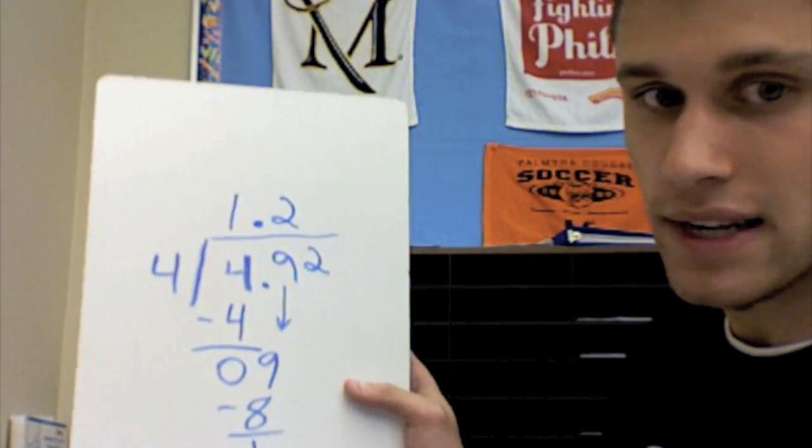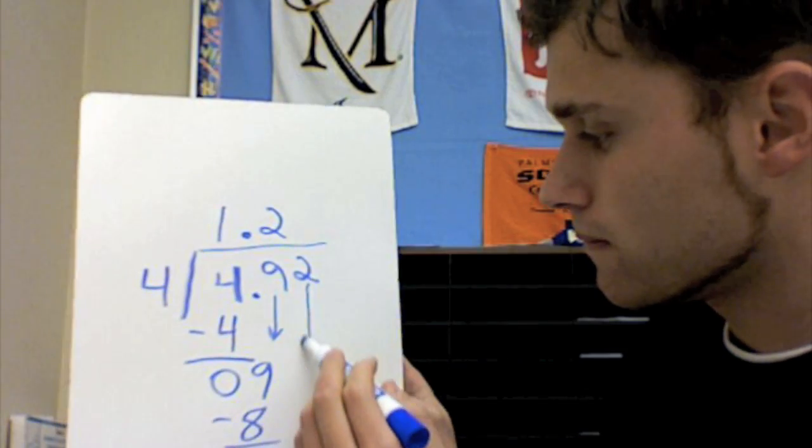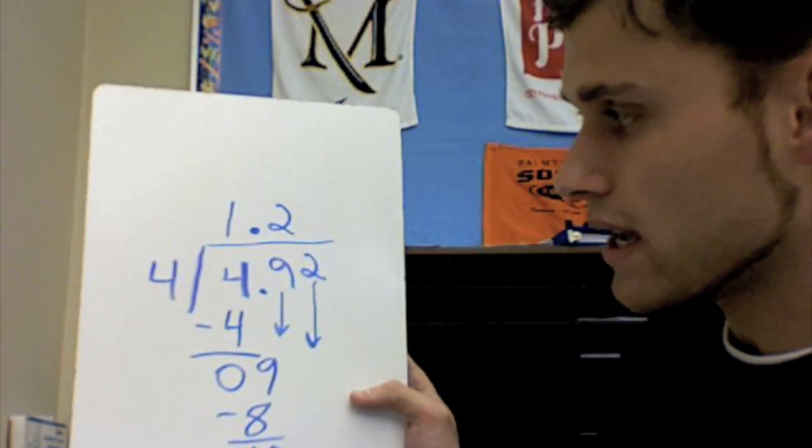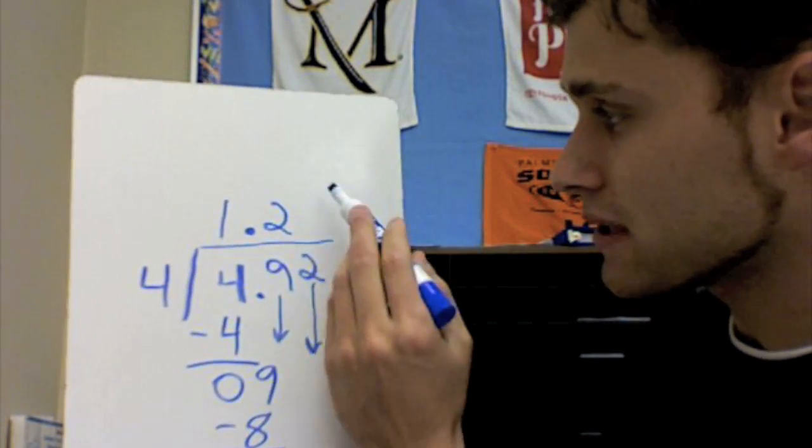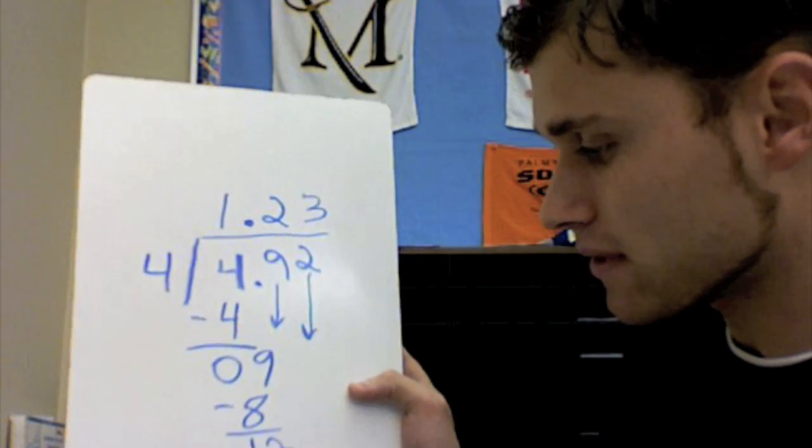Now we have to bring down our 2. And 4 goes into 12 how many times? 3 times. 3 times 4 is 12.